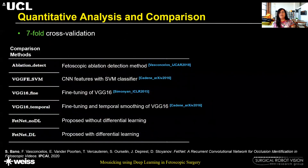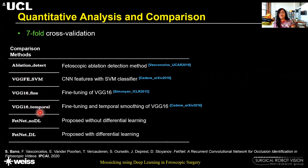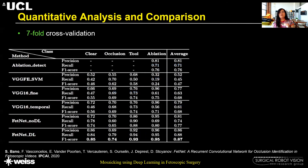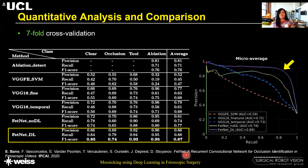We use seven-fold cross-validation across seven videos and performed comparison with an existing ablation detection method, methods commonly used for phase detection in surgical videos, our proposed method without differential learning, and with differential learning. FitNet with differential learning tends to give the overall best performance with an F1 score of about 87%, which is also reflected in the precision-recall curve where FitNet performed much better than all other methods under comparison.